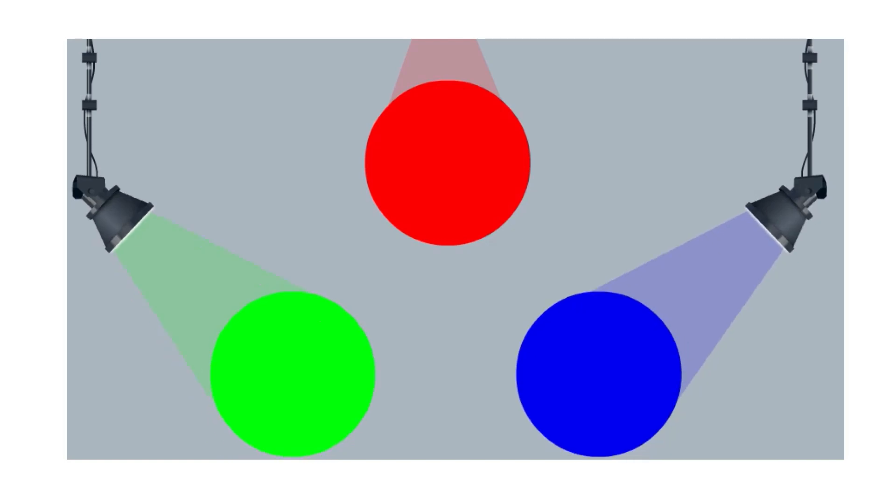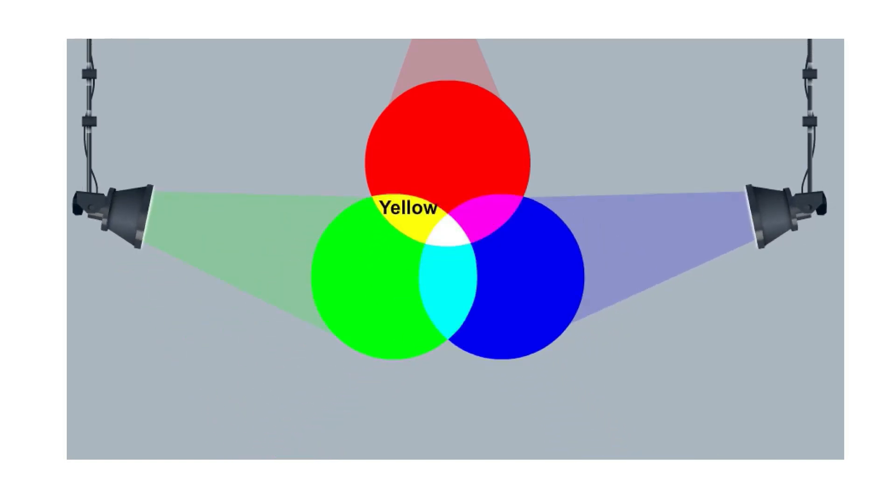The colours produced by mixing two different primary colours, which are yellow, cyan and magenta, are called the secondary colours.